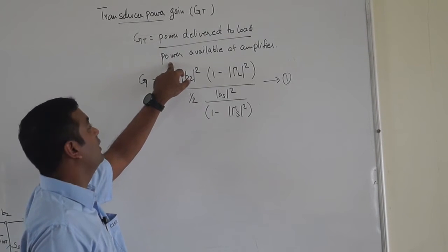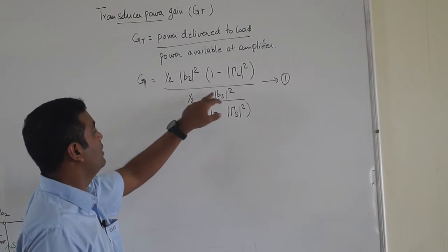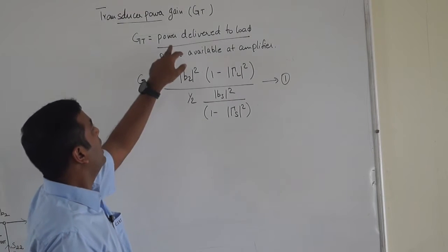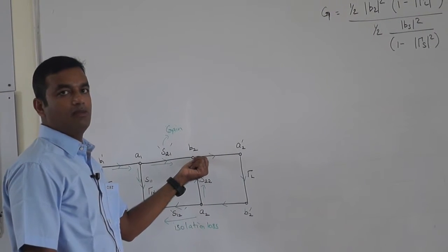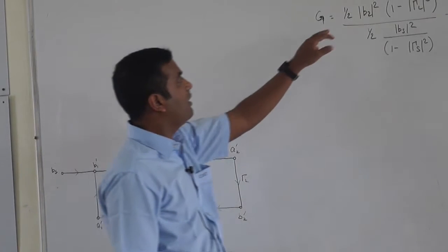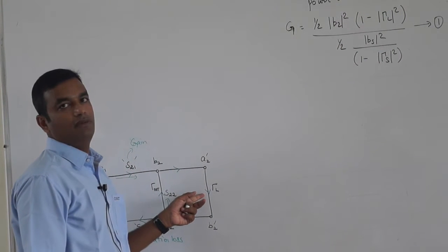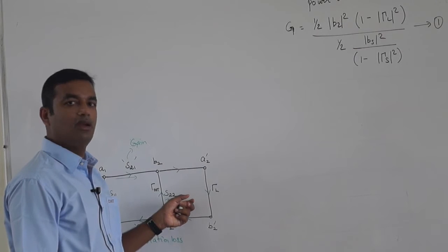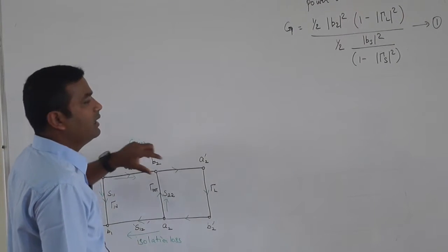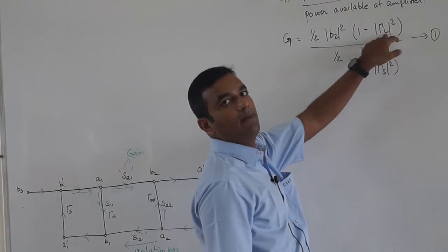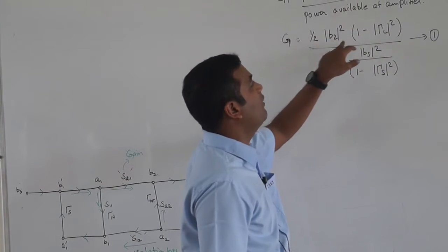We derived the power available at the amplifier in the last session as (1/2)|b_s|² / (1 − |γ_s|²). The power delivered to the load is (1/2)|b_2|², but we also need to consider the reflection coefficient γ_L. So it becomes (1/2)|b_2|² × (1 − |γ_L|²). If perfectly matched, γ_L = 0 and the power is simply (1/2)|b_2|².